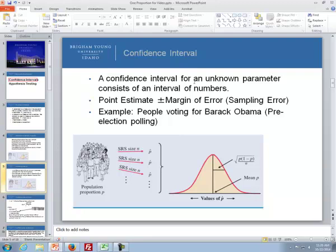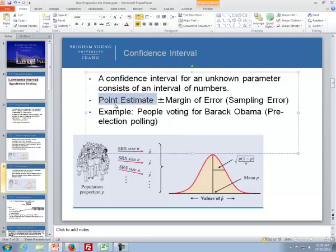A confidence interval for an unknown parameter, in this case it'll be p, consists of an interval of numbers. We're going to take our point estimate, or p-hat, and add and subtract a margin of error to come up with a confidence interval. For example, with people voting for Barack Obama, if we do a pre-election poll and find in a sample that 51% are going to vote for Obama, and the margin of error is plus or minus 3%, we would say with a certain level of confidence that the percentage of people that will vote for Barack Obama is 48% and 54%.